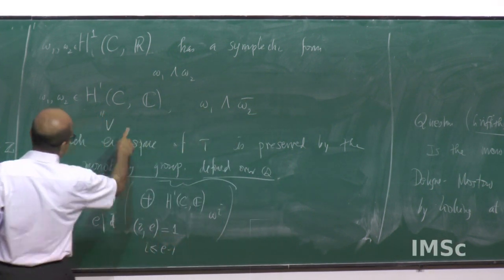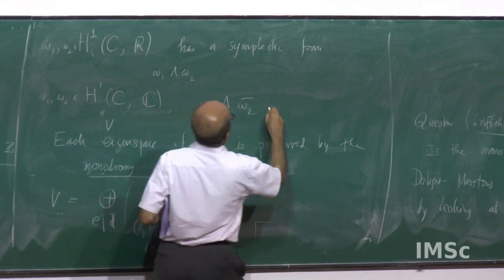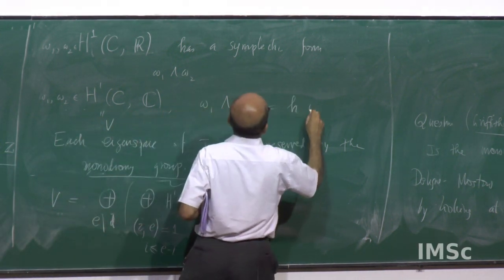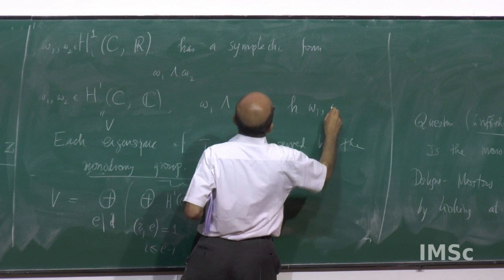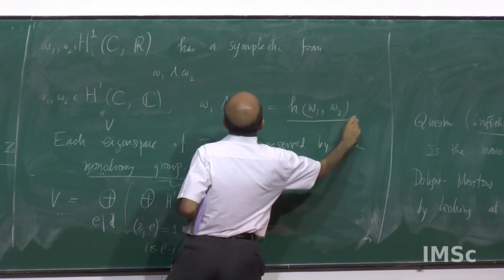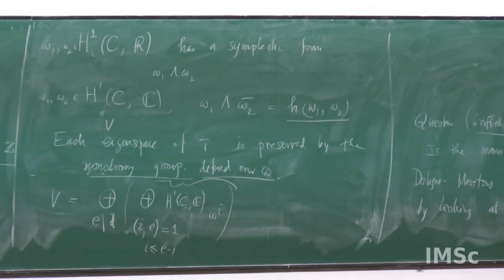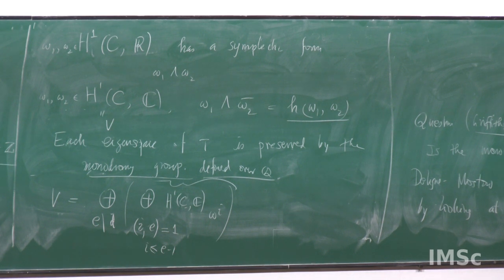And so, this is the Hermitian form I am talking about: H(omega_1, omega_2). And it preserves this Hermitian form, so it goes into this group.